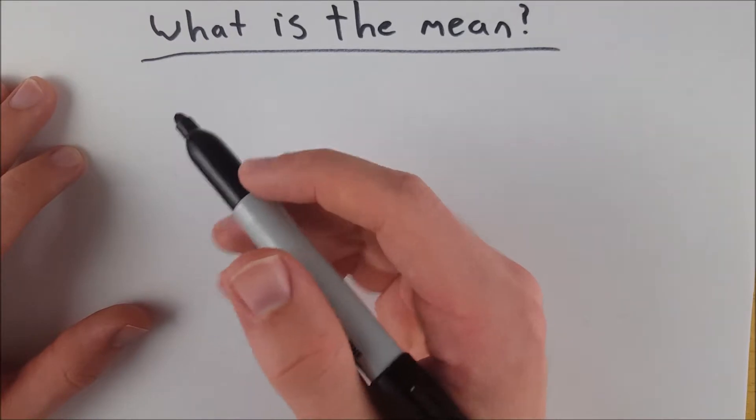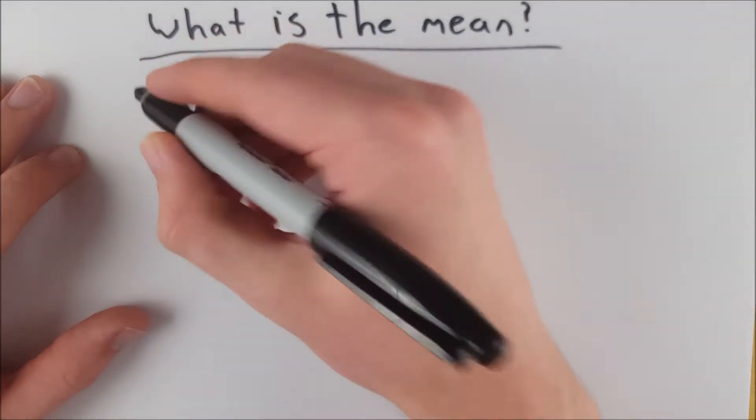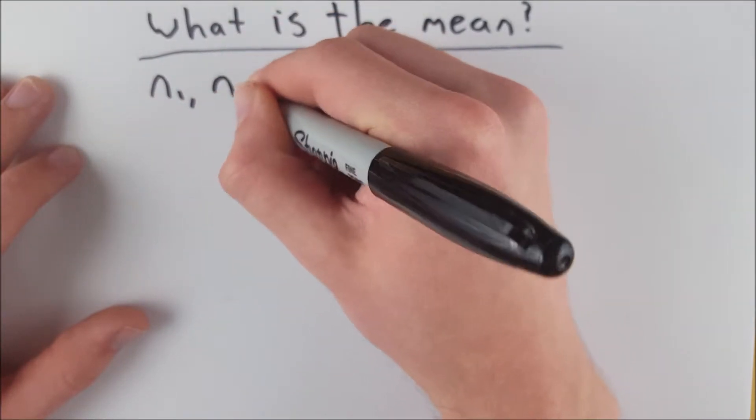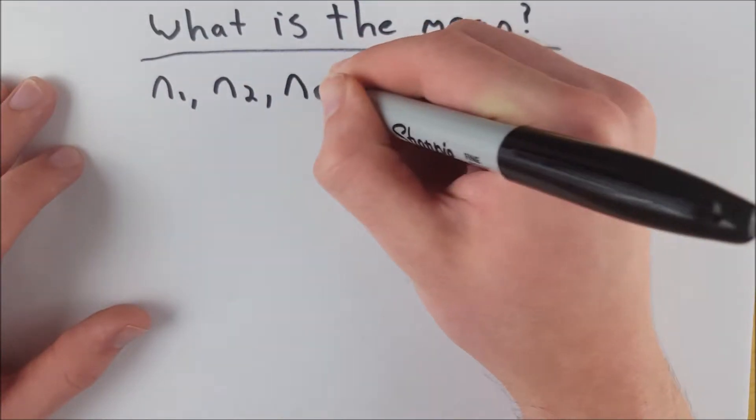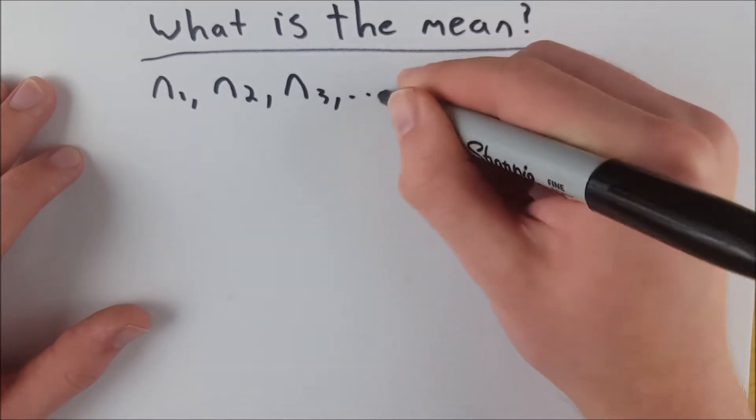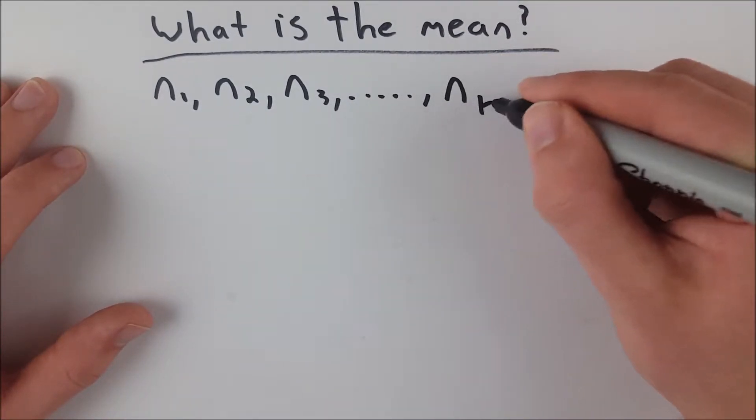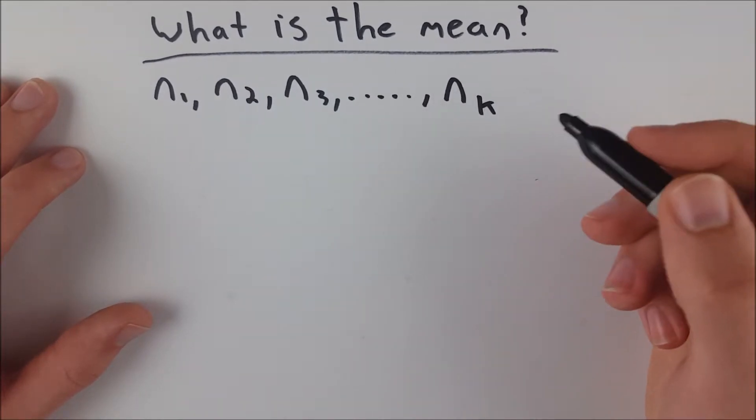So let's say you have a set of data, and these are your data points. We'll call them n, so we've got n sub 1, n sub 2, your second data point, your third data point, and it goes on and on until you get to n sub k, where we'll say k is your final data point.